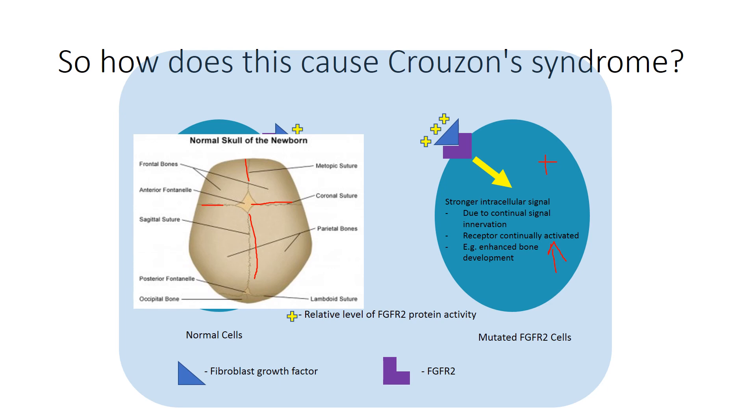Many features of Crouzon syndrome result from this premature fusion. Hopefully, this has provided you with a quick rundown of how the structure of FGFR2 is critical for its function, and that the mutations result in its continual activation, as can be seen in Crouzon syndrome.